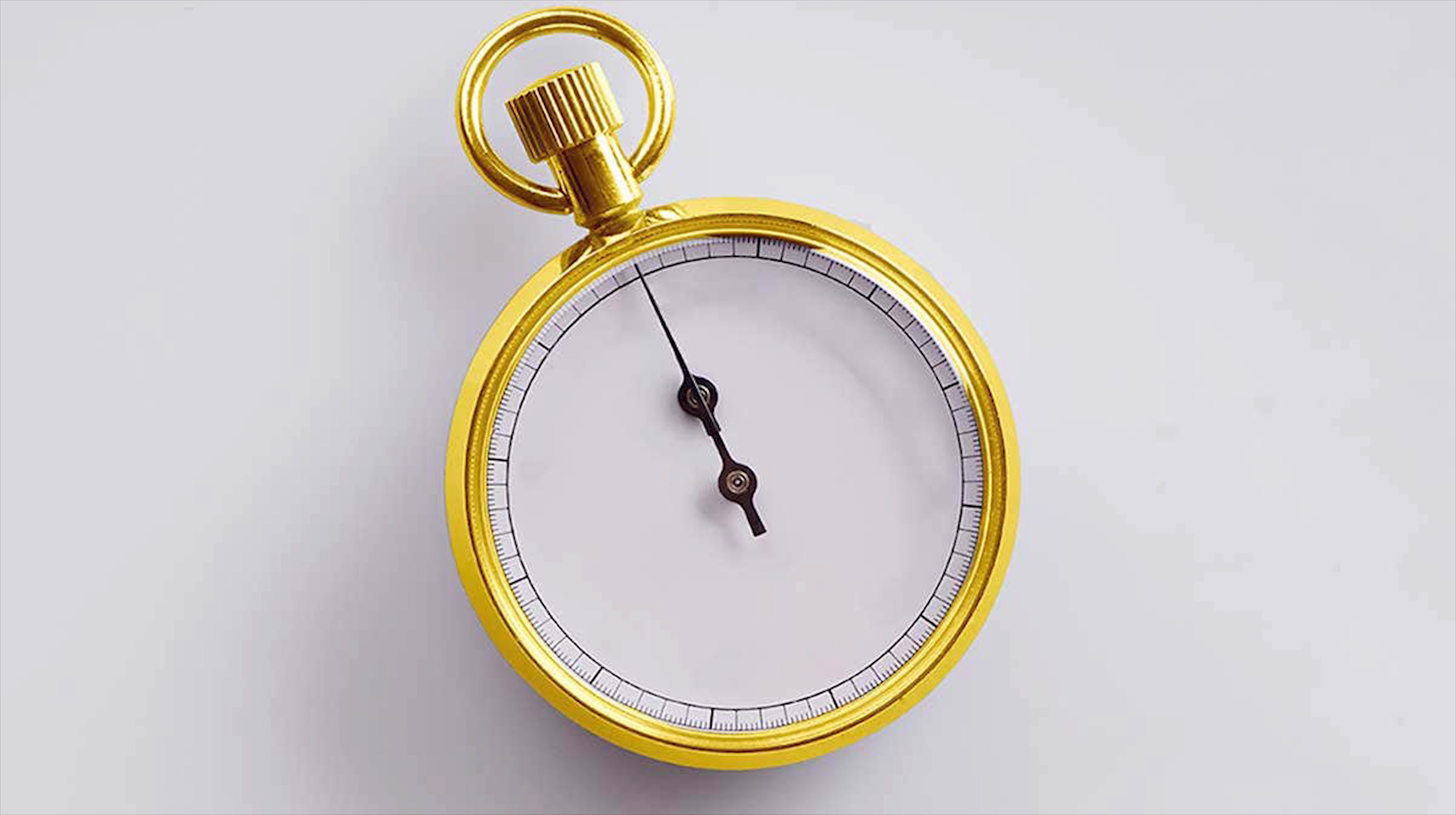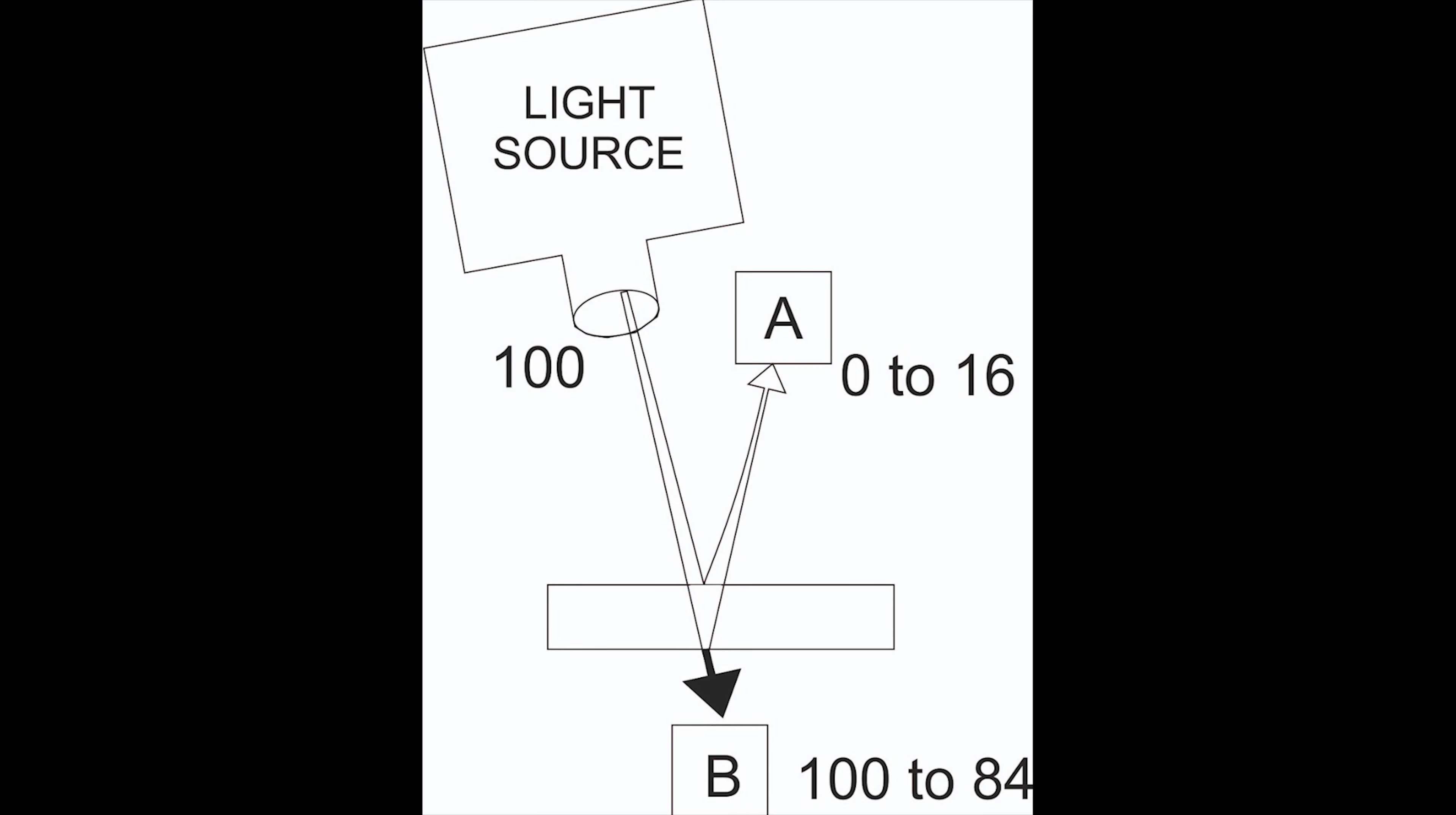When the photon ends up at the photomultiplier, we stop the watch. The hand ends up pointing in a certain direction. That is the direction we will draw the arrow.